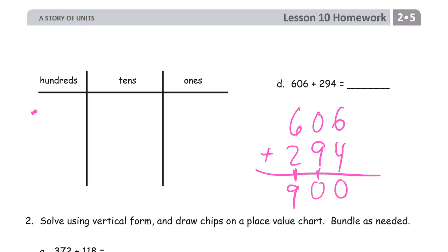Over here we have six hundred six. One, two, three, four, five, six hundreds, no tens, one, two, three, four, five, six ones. Two hundred ninety-four, here's two hundreds, one, two, three, four, five, six, seven, eight, nine tens, and four, two, three, four ones. That's ten. And now this is ten. And that's ten tens, so it's a hundred. Count our hundreds. One, two, three, four, five, six, seven, eight, nine.